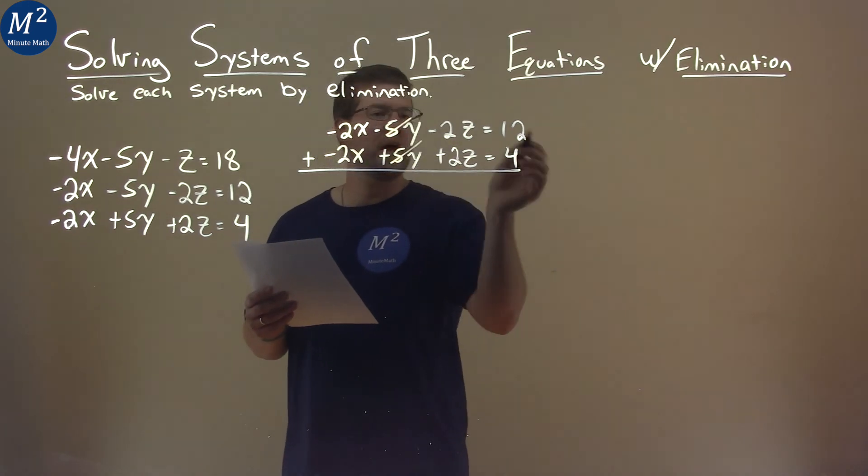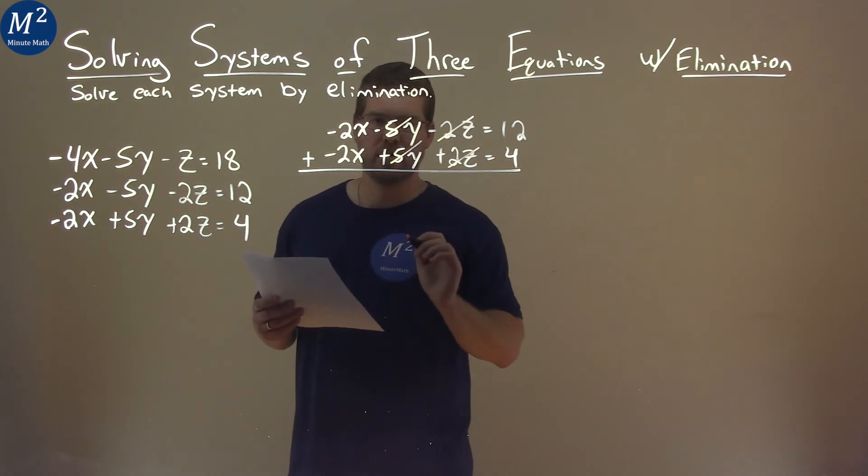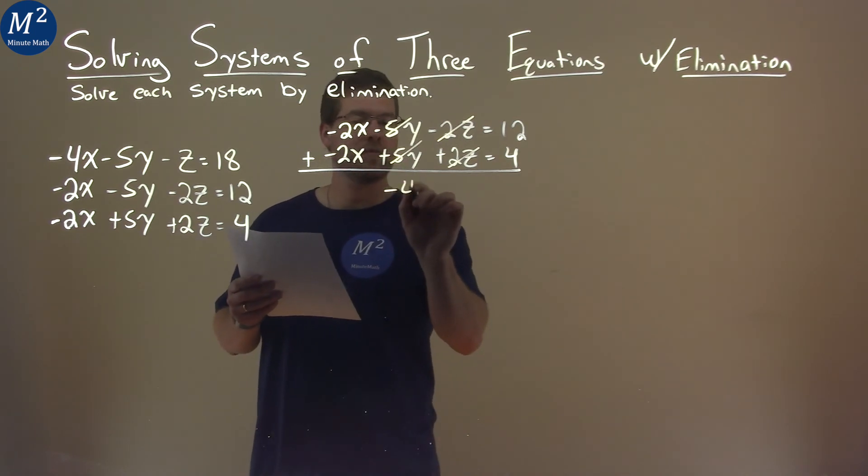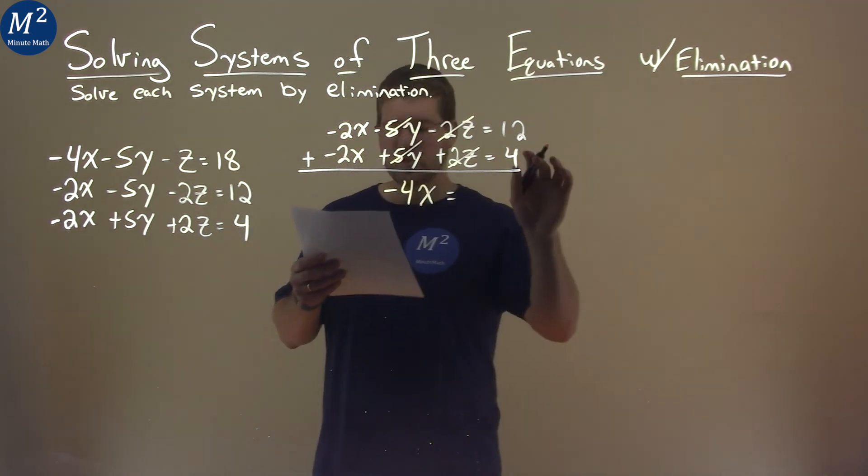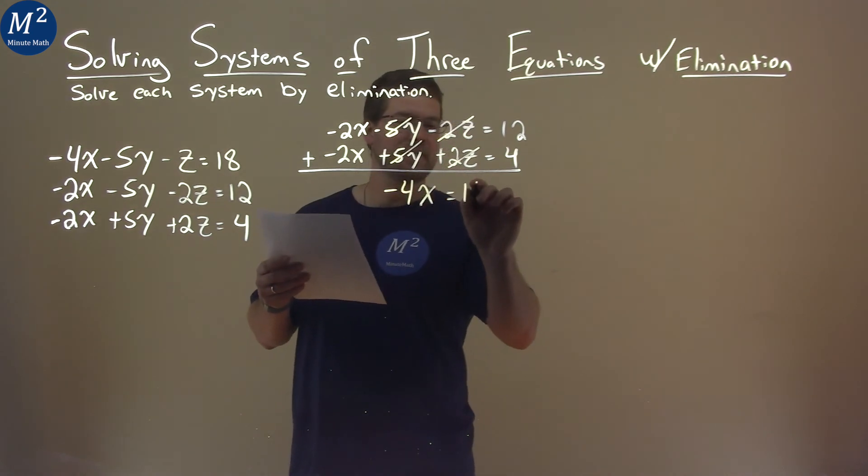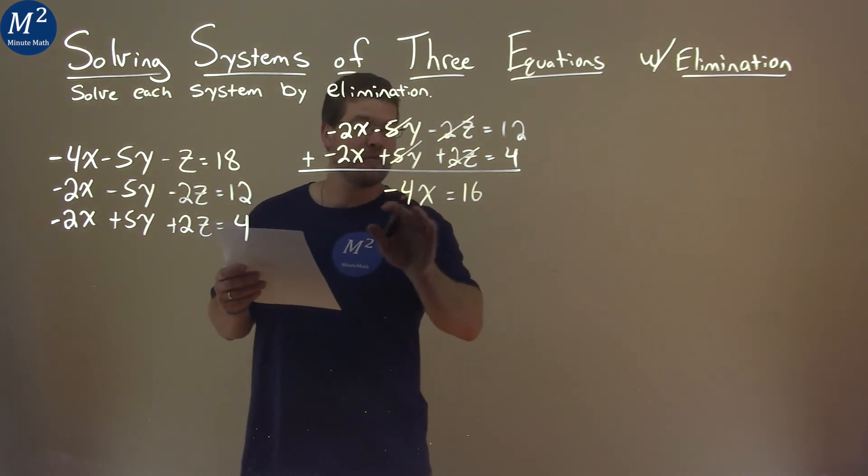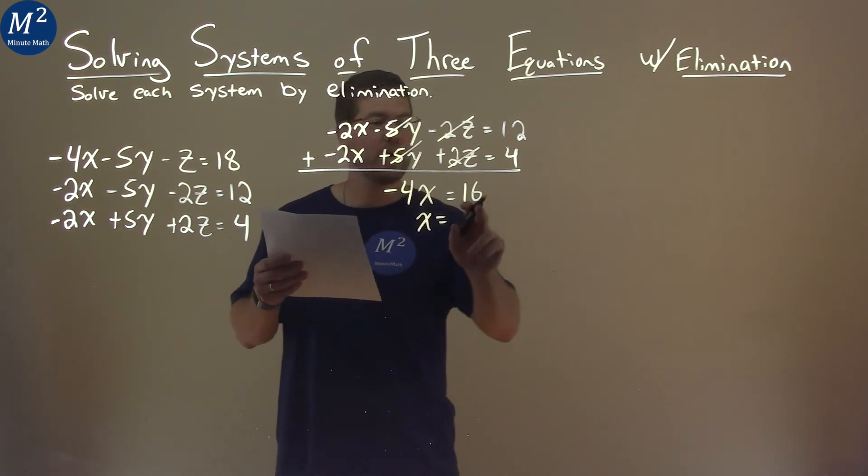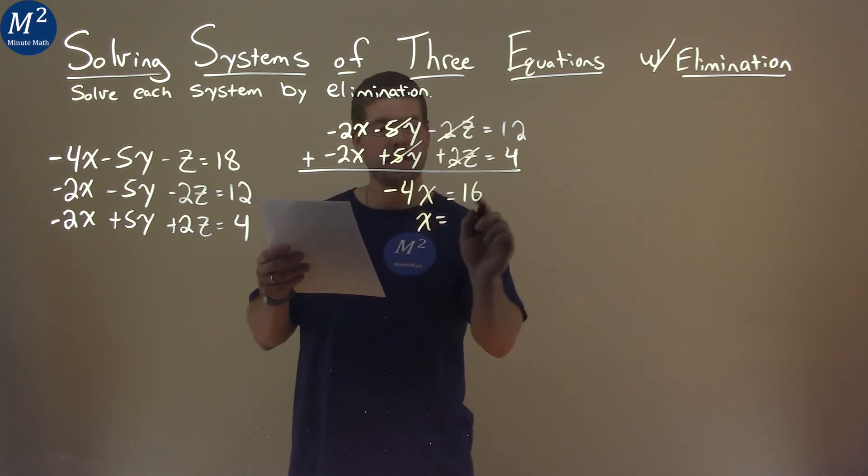So when we add them together, we know that's going to cancel each other, and this will cancel each other out. And we're left with negative 2x plus negative 2x, which is negative 4x. And then 12 plus 4 is 16. Well, divide negative 4 to both sides. And we get 16 divided by negative 4 is negative 4.